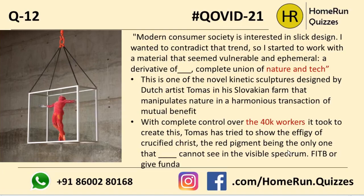Question number twelve: Consumer Society novel, sculpture, complete union of nature and tech. The clincher was 40,000 workers — 40,000 bee workers, the worker class of bees. This guy actually made a sculpture with live bees. All the small holes you might see are places where the bees stuck in and created beeswax, and then he removed the scaffold. That's how he made this sculpture.